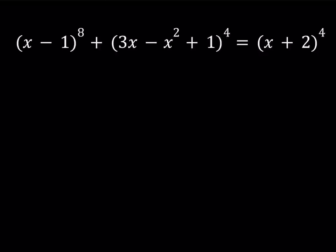Hello everyone. In this video we're going to be solving an octic polynomial equation. We have (x-1) to the 8th power plus (3x - x² + 1) to the 4th power, and that is equal to (x+2) to the 4th power.